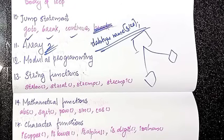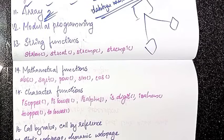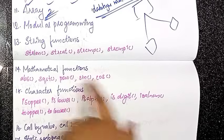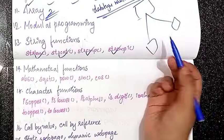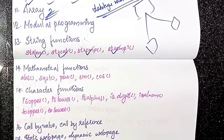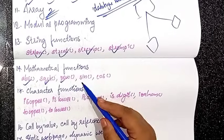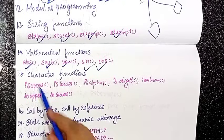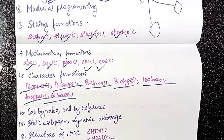The next topic is string functions. In the third chapter, you can learn string functions. These include: strlen, strcat, strcmp, and strcmpi. Mathematics functions include square root, power, and sin. Character functions include isupper, islower, isalpha, isdigit, toupper, and tolower. There are three character functions to learn.